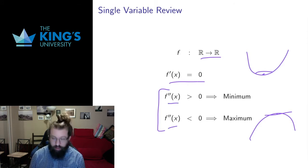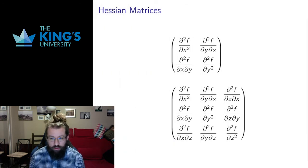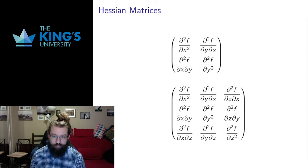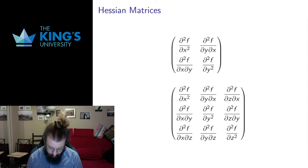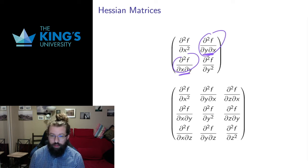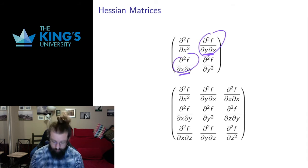For single variable functions, the second derivative is just one thing — it's simple. For multivariable functions, it's quite a complicated thing. We have many possible second derivatives: pure second partials and mixed second partials. We can put these into a thing which is called a Hessian matrix — a matrix that contains all of the second partial derivatives of a scalar field. Note this is different from the Jacobian matrix. This is always necessarily a square matrix, and it will always be symmetric because of Clairaut's theorem.